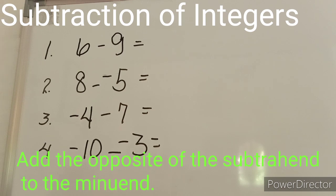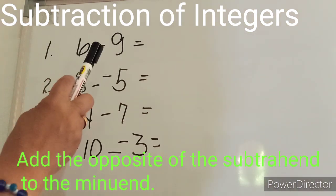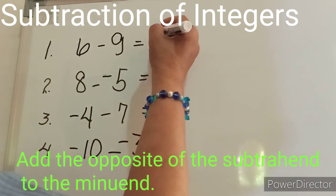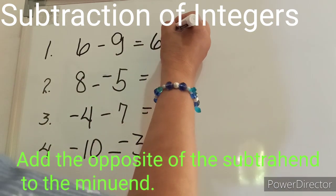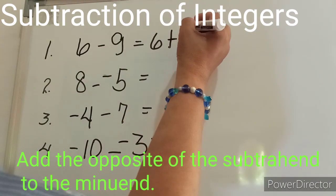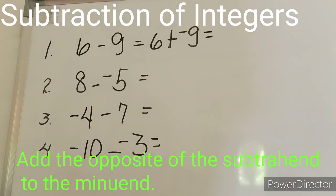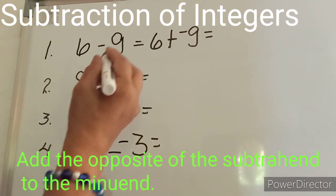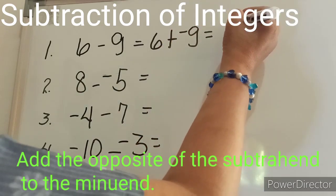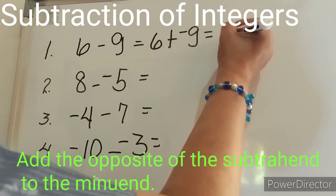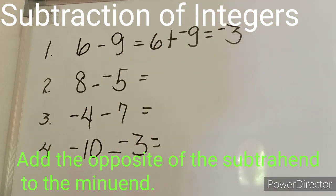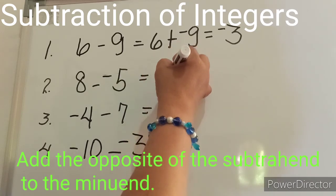I hope you formulated a similar rule. Applying this — adding the opposite of the subtrahend to the minuend — we have: six, and we add the opposite of nine, which is negative nine. This brings us to addition of unlike signs: we disregard the signs, subtract the smaller from the bigger, nine minus six equals three, but the sign of nine considered larger is negative, therefore our answer is negative three.